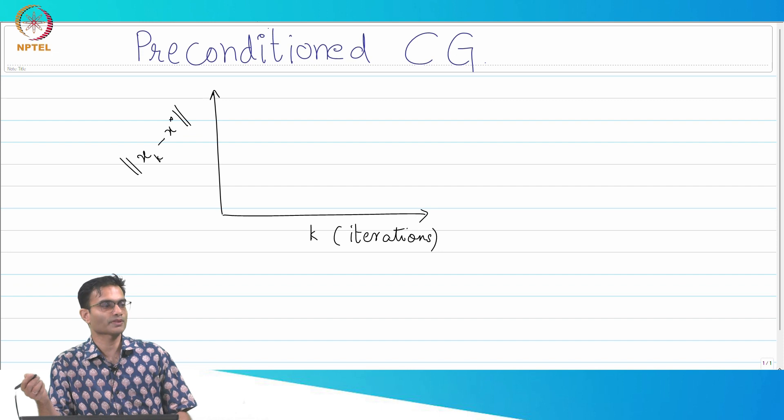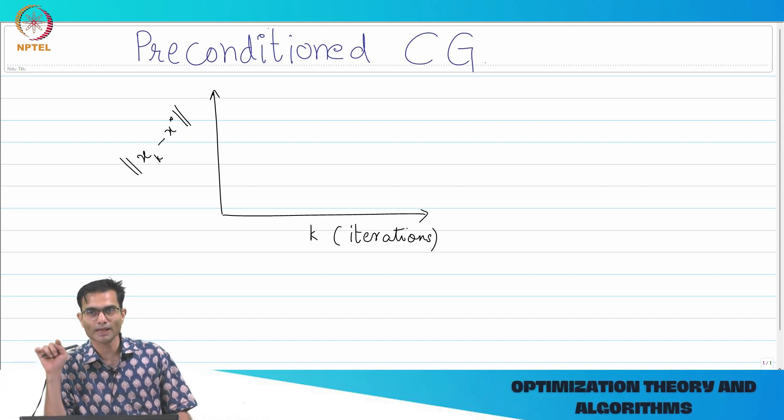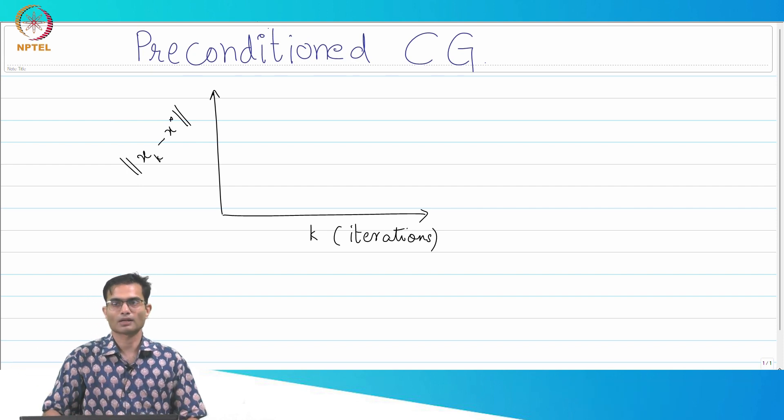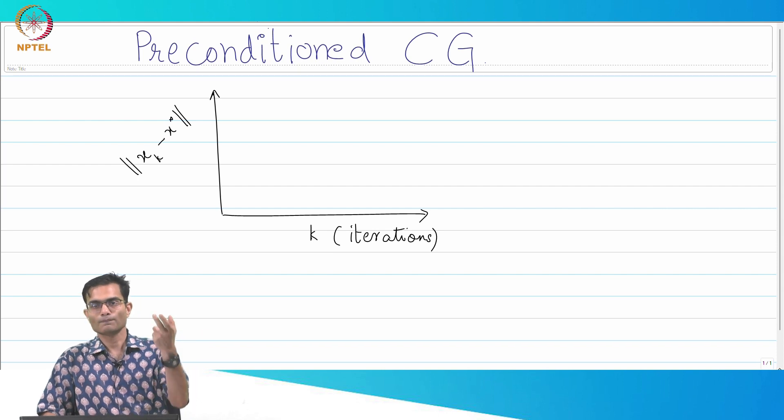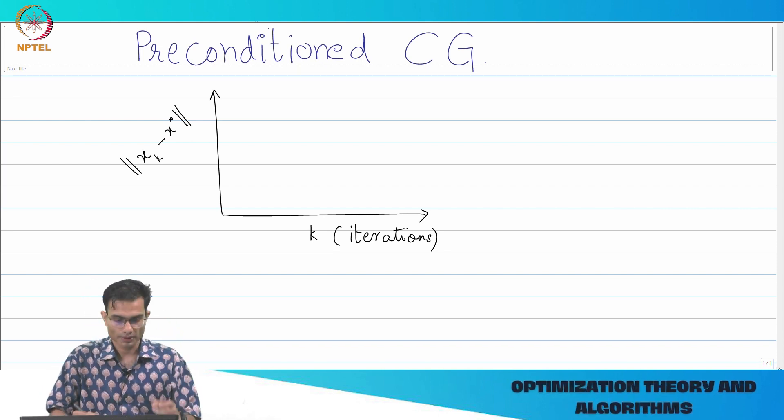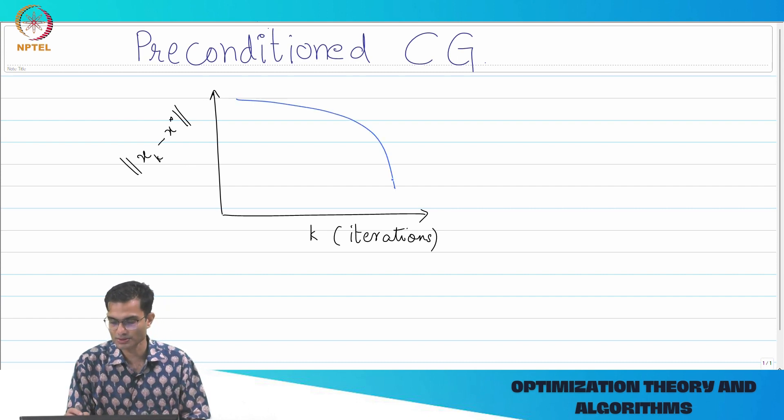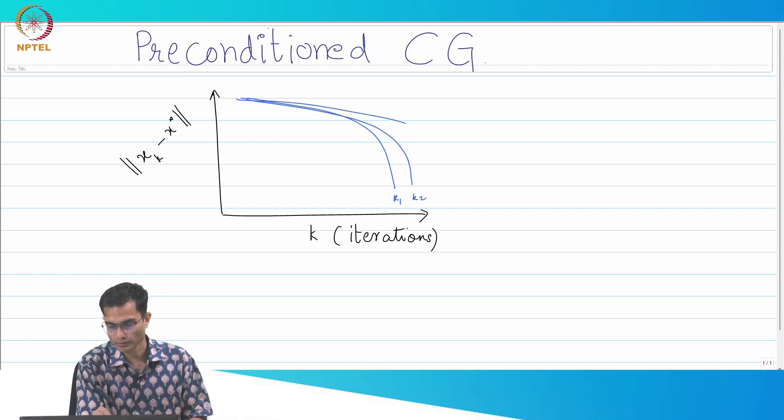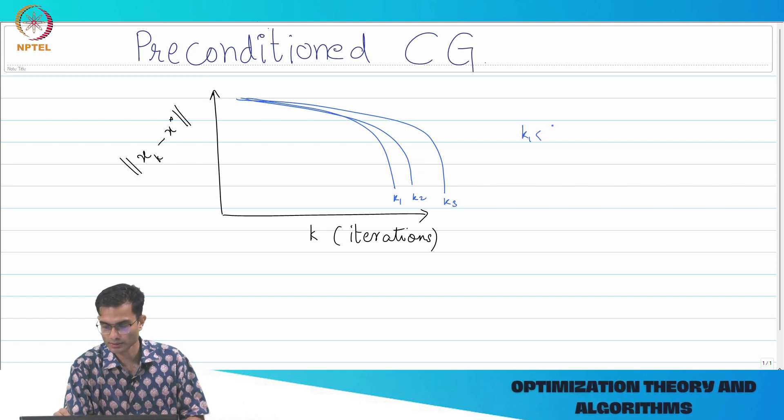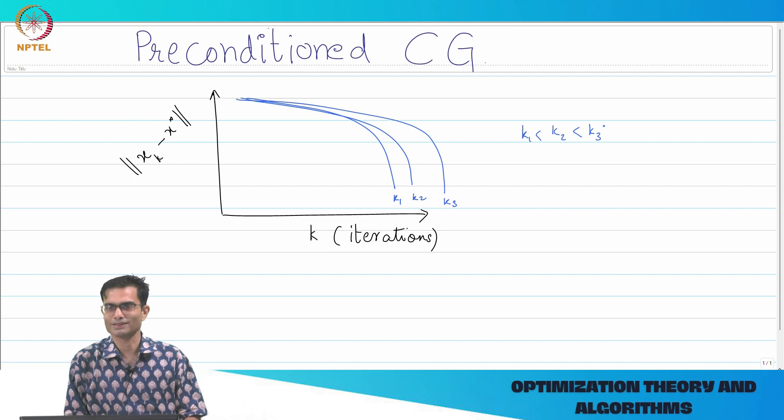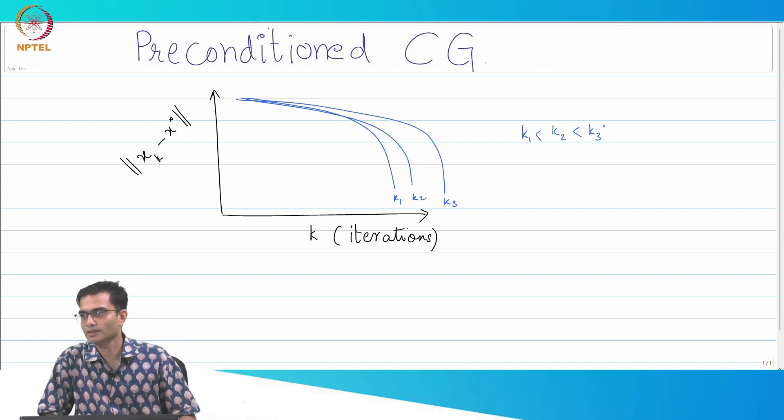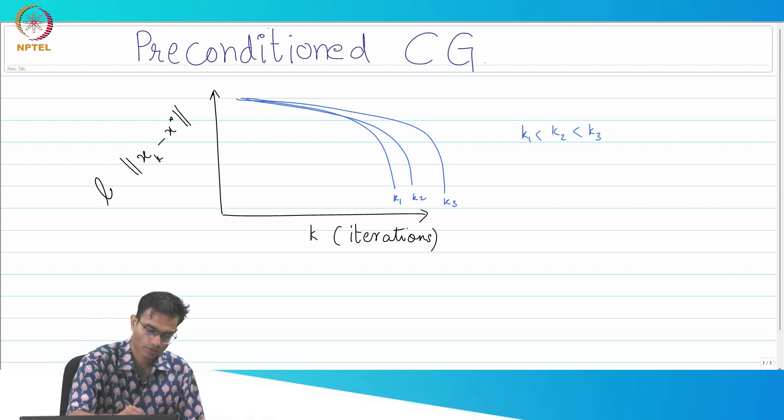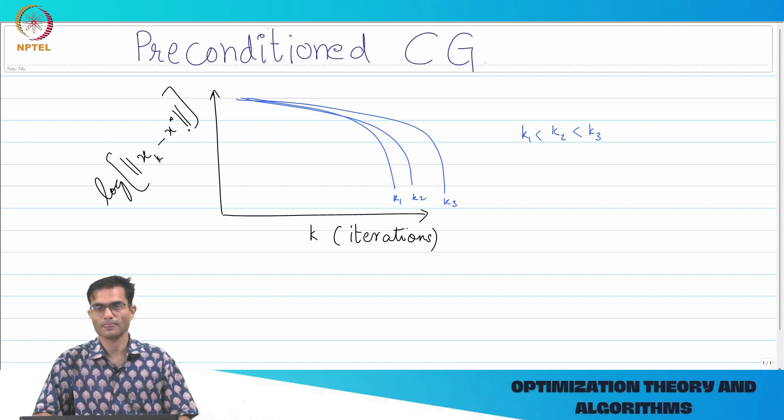There's MATLAB code on the website which we discussed last time. You can manually play around with the condition number and make your problem easier or hard, and then you can plot this graph which shows you that as the iterations go, how close do I get to the solution? What you will find is kappa 1, then kappa 2, then kappa 3. The behavior of the error is something like this, and this is actually in log scale.